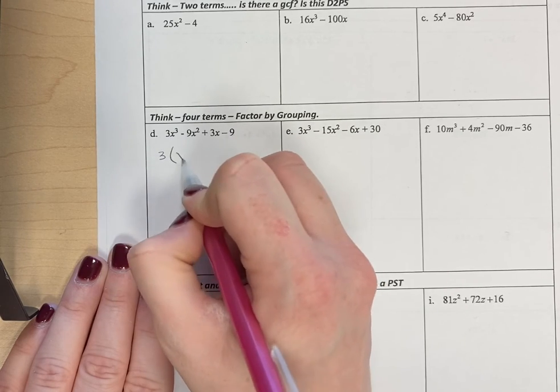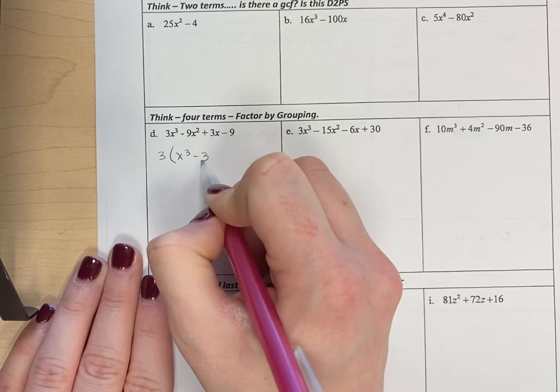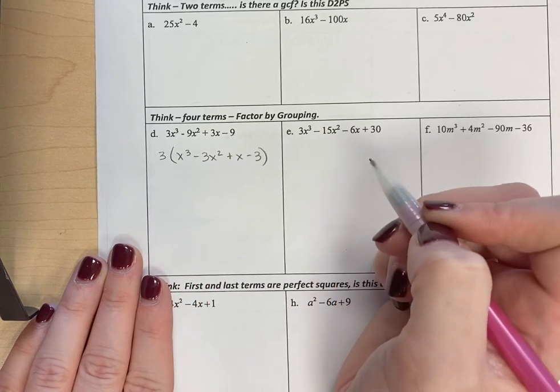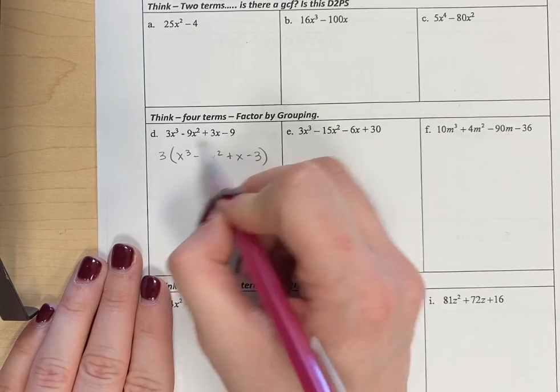If I do that, I have now x cubed minus 3x squared plus x minus 3. Just divide everything by 3.